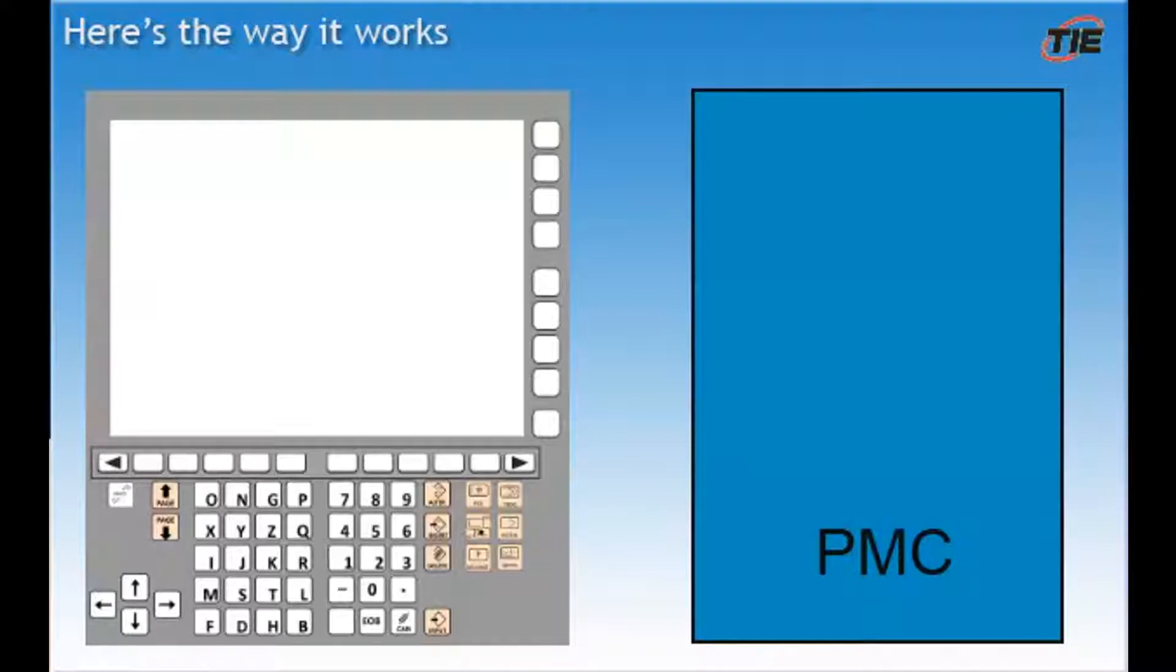Here's the way it works. The CNC reads an M code in the part program. This information is sent over to the PMC. The PMC does whatever it is that it's supposed to do. The PMC then tells the CNC it's finished. The CNC moves on to the next line in the part program.